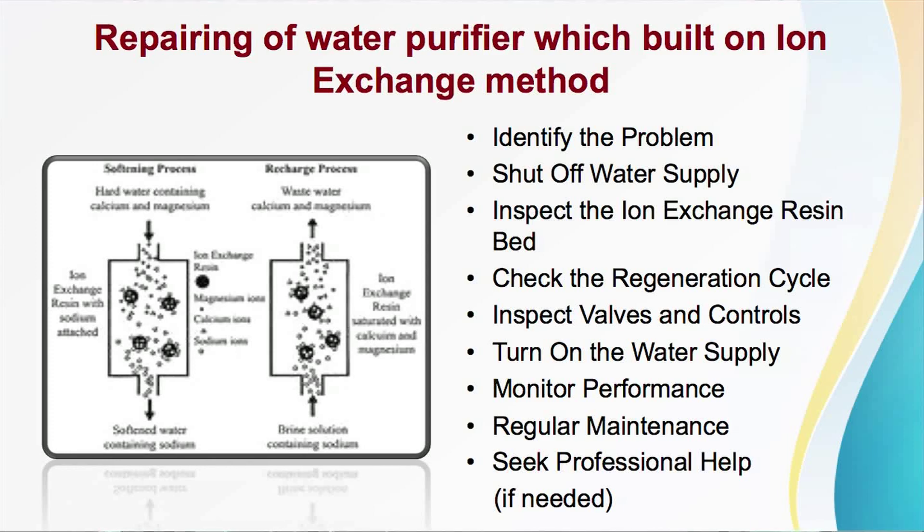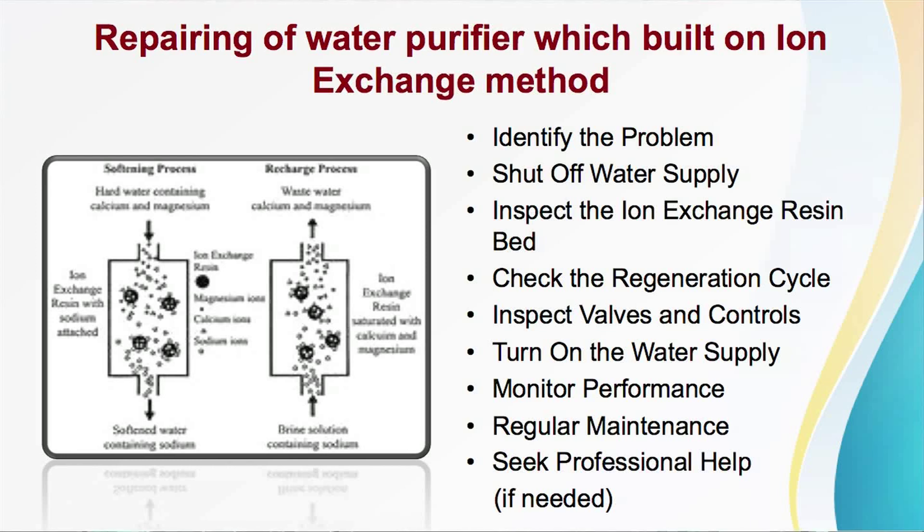Next is inspect the ion exchange resin bed. If your water softener or purifier uses an ion exchange resin bed, inspect it for issues. Open the resin tank or housing according to the manufacturer's instructions. Check the resin bed for signs of fouling, depletion, or damage. If the resin bed is fouled or depleted, it may need to be replaced. Carefully scoop out the old resin and add new resin according to the manufacturer's guidelines, then reassemble the resin tank or housing securely.